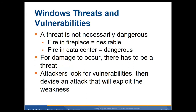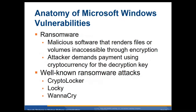Anatomy of a Microsoft Windows vulnerability: Ransomware. Basically, malicious software that renders files — it encrypts files. Attackers demand payment using cryptocurrency, and they'll send you the decryption key, maybe. Well-known ransomware attacks include CryptoLocker, Locky, and WannaCry.